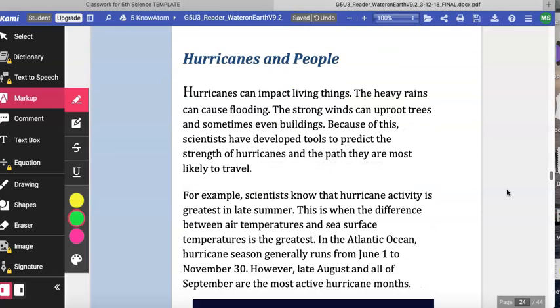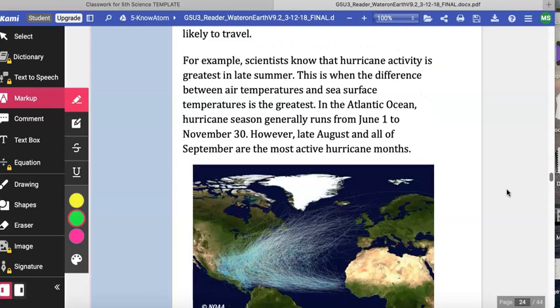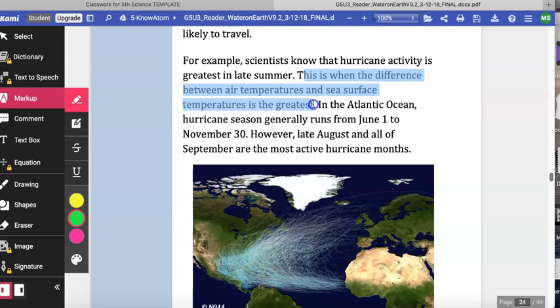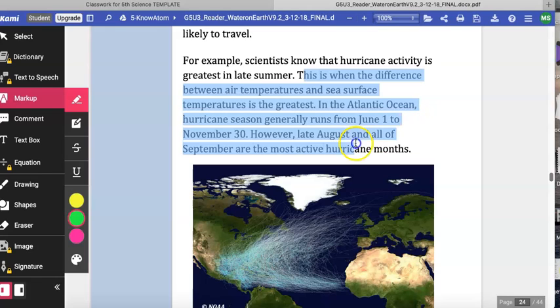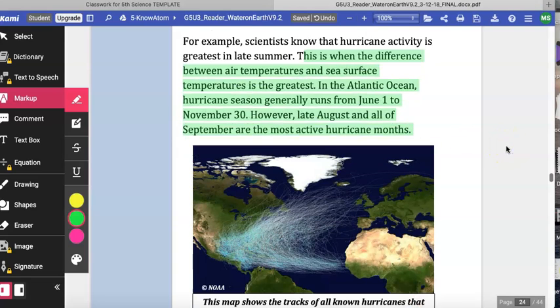Hurricanes and people. Hurricanes can impact living things. The heavy rains can cause flooding. The strong winds can uproot trees and sometimes even buildings. Because of this, scientists have developed tools to predict the strength of hurricanes and the path they are most likely to travel. For example, scientists know that hurricane activity is greatest in late summer. This is when the difference between air temperatures and the sea surface temperatures is the greatest. In the Atlantic Ocean, hurricane season generally runs from June 1st to November 30th. However, late August and all of September are the most active hurricane months.